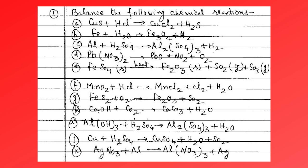Balance the following chemical reactions: CuS plus HCl → CuCl2 plus H2S; Fe plus H2O → Fe3O4 plus H2; then Al plus H2SO4 → Al2(SO4)3 plus H2.